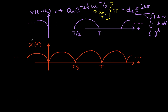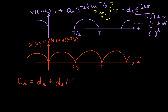The last thing I need to do: x of t is v of t plus v of t minus t over 2, which means the Fourier series coefficients — we'll call these c sub k — will be equal to the Fourier series coefficients of v of t, which are d of k, plus the Fourier series coefficients of this time-shifted version of v, which are d sub k times minus 1 to the k power. When k is even, this is plus 1, and I just have 2 times d of k. When k is odd, I'll have d of k minus d of k, or 0.